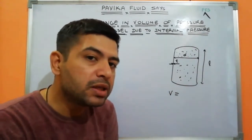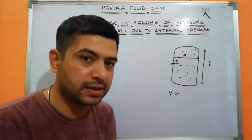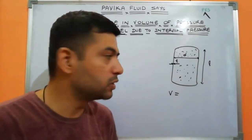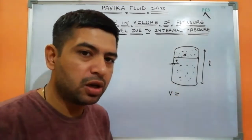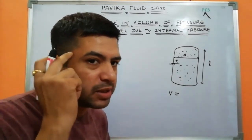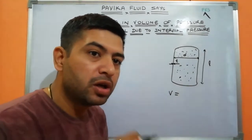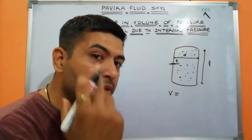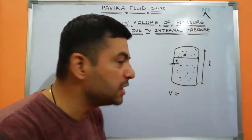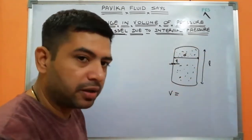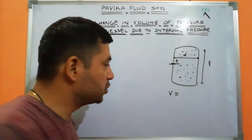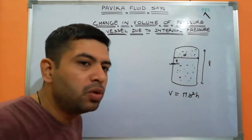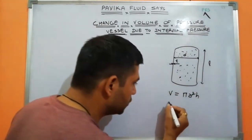Volume is the empty space inside a vessel — how much water you can pour into it, measured in liters or cubic meters or cubic centimeters. Since our vessel is cylindrical, the volume of a cylinder from 10th grade mathematics is πr²h.